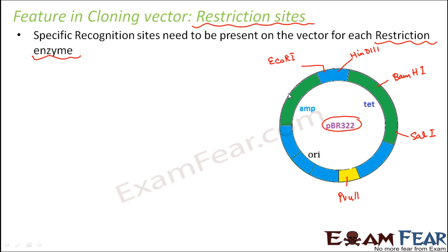Here you also have restriction sites for enzymes PVU1 and PST1. These are all different restriction enzymes, and each needs a specific recognition sequence to do their job — and that recognition sequence is present in these specific regions. This one vector has multiple restriction sites containing recognition sequences for different restriction enzymes. So if you want this vector cut by BamHI, it will be able to cut because the recognition sequence for BamHI is present here.